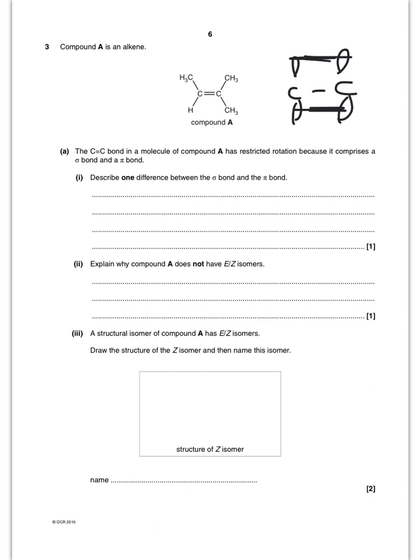Why does carbon A not have E-Z isomers? Well, to have E-Z isomers, you need to have different groups on these carbons. But as you can see, I've got CH3 groups on that carbon there, and therefore it doesn't matter if I swap them around because it's still a CH3 group. So that's why.